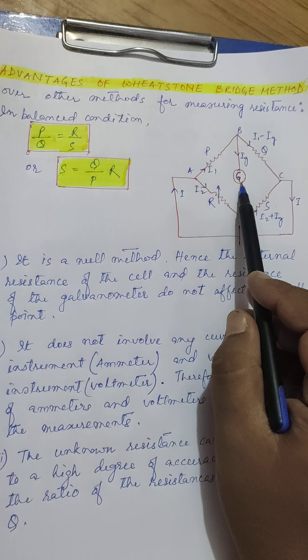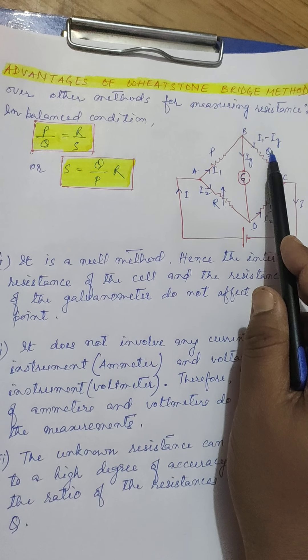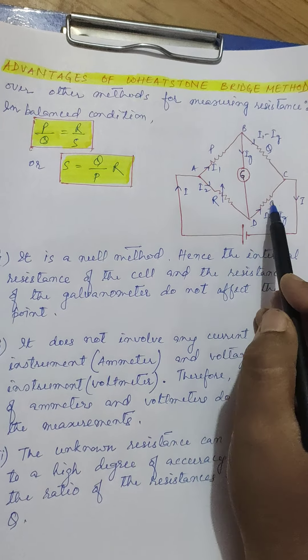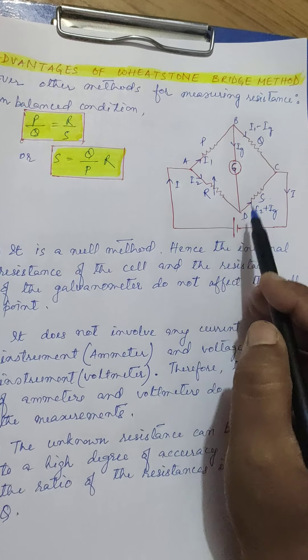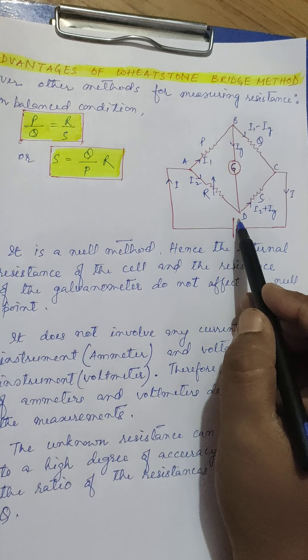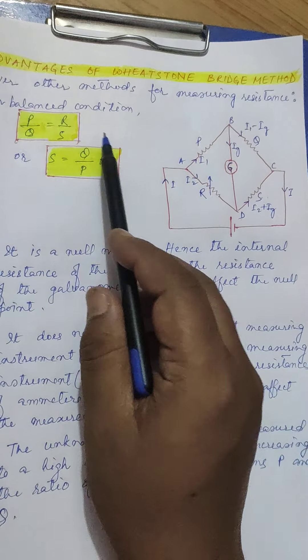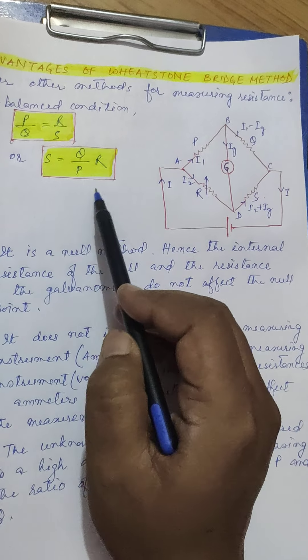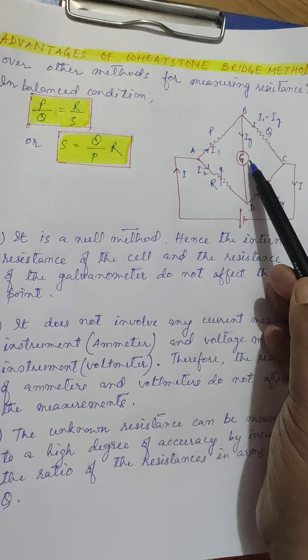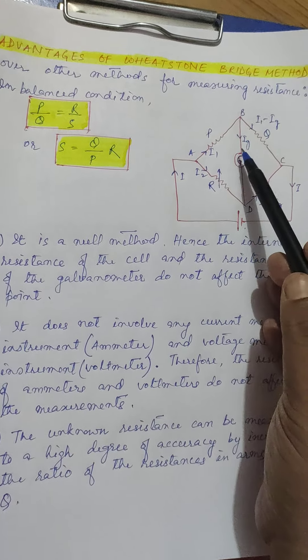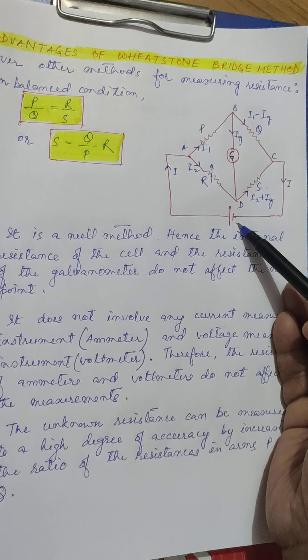So the null point is actually decided by the ratio of P, Q, R and S. So the resistance of the galvanometer, neither the internal resistance of the cell have any effect on this method. So this is the better method as compared to some other method where the resistances of other things used in the circuit, whether it is the galvanometer or the cell, don't have any effect.